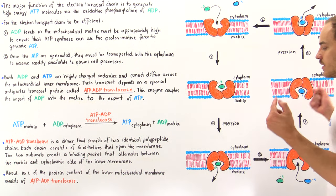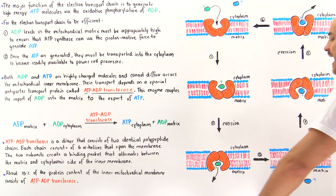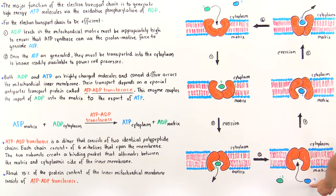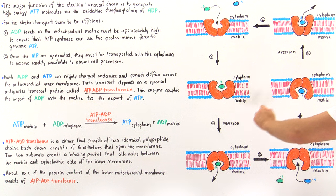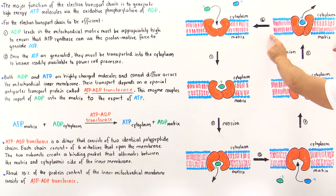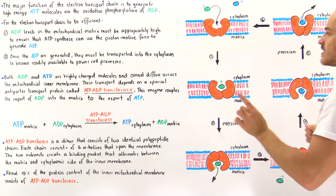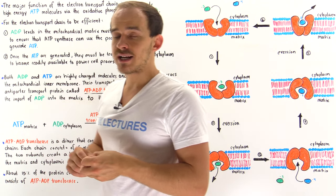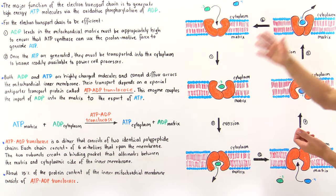In this eversion process, the binding pocket flips so that it now faces the matrix side rather than the cytoplasmic side, allowing the ADP molecule to move into the matrix. Once the ADP leaves the binding pocket, an ATP molecule — shown in blue with a negative 4 charge — moves into the pocket. Another eversion then takes place in the opposite direction, so the binding pocket now faces the cytoplasmic side. The ATP can then leave the pocket into the intermembrane space and move into the cytoplasm via a protein on the outer mitochondrial membrane known as the mitochondrial porin, after which the cycle repeats.